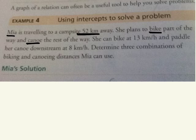When she bikes, what is she traveling? 13 kilometers per hour. And when she canoes, what's her speed? 8 kilometers per hour.